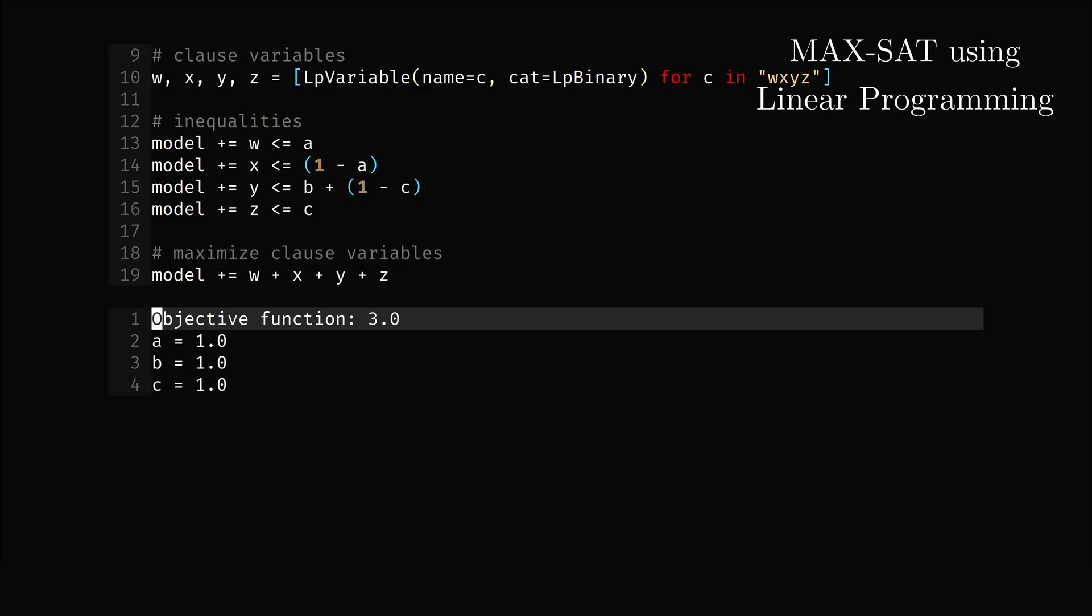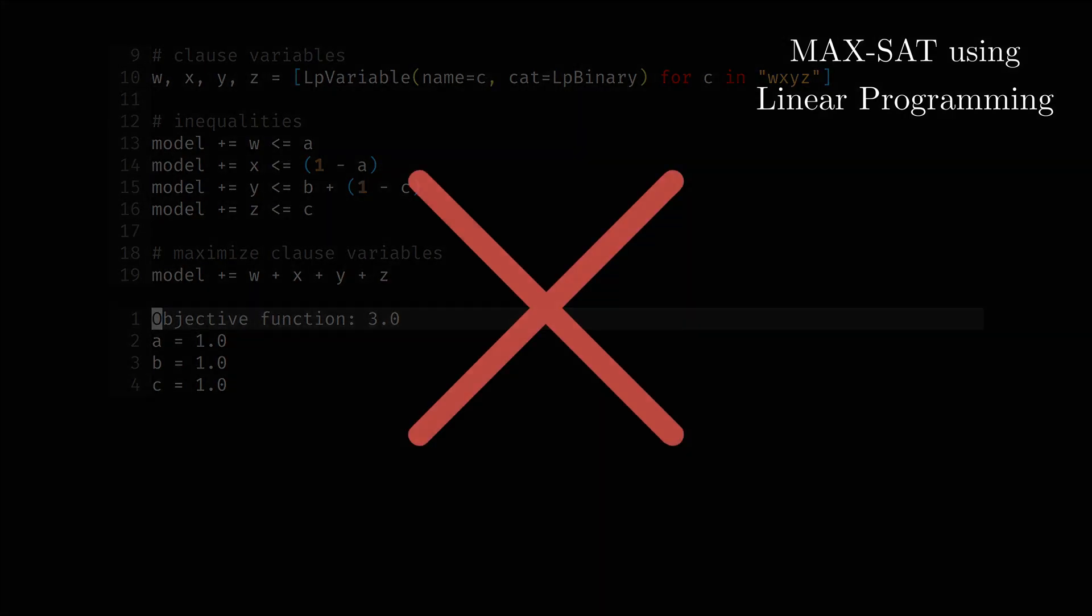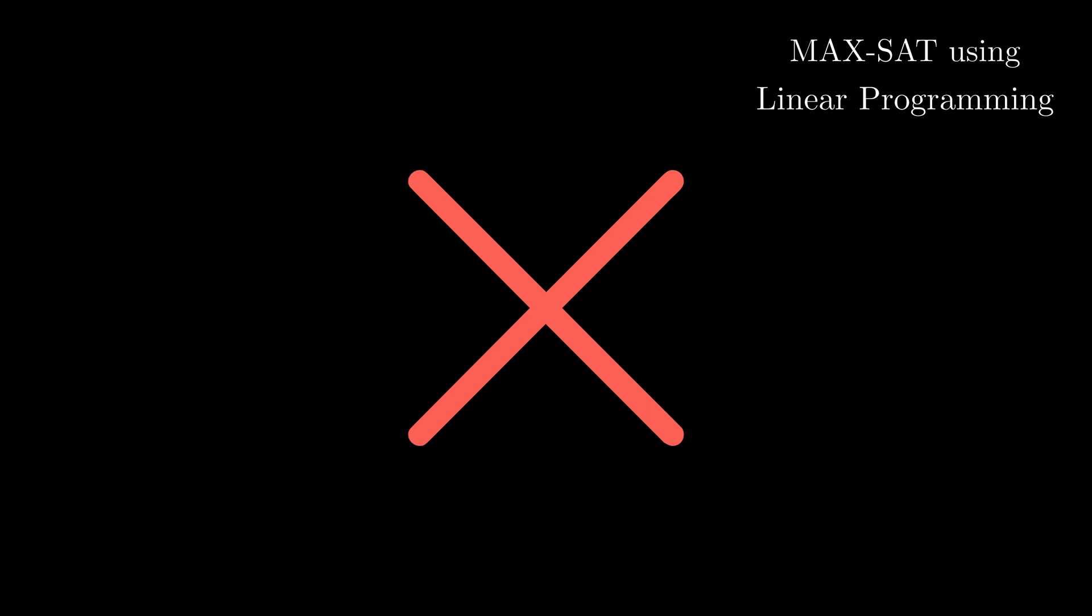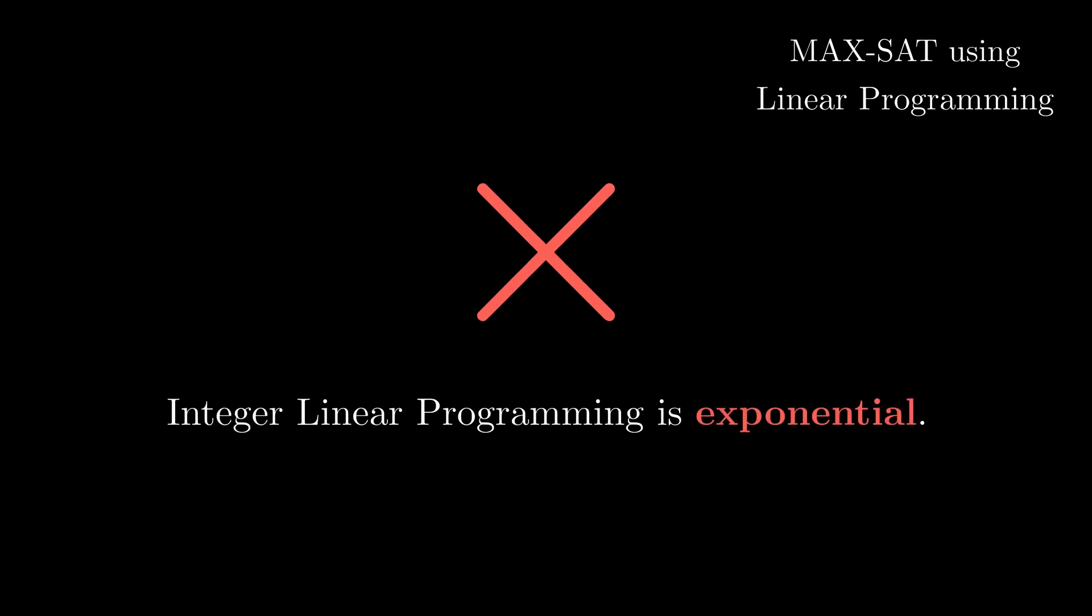At first glance, it seems like we've created a fast, exact algorithm for MAX-SAT, but that's only because we cheated. Arbitrarily setting variables to be integers, binary to be more specific, makes linear programming exponential, so this won't work. Well, let's fix it.